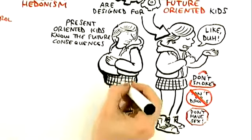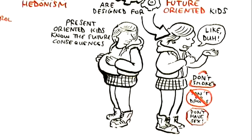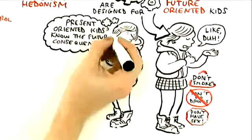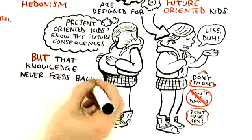If you're a teenage girl, you know that if you have unprotected sex, you're likely to get pregnant or have sexually transmitted disease. You know it, but that knowledge never feeds back to change your behavior.